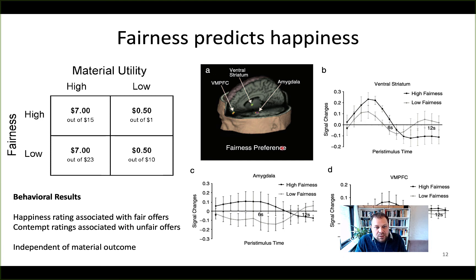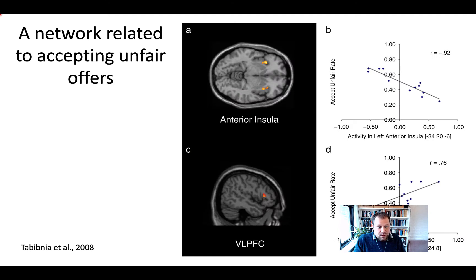When looking at the imaging results, there is a set of regions including the VMPFC, ventral striatum, and amygdala that seem to encode the fairness of the offer. High fairness trials show greater responses in the ventral striatum relative to low fairness trials, and the same is observed in the VMPFC and to some extent in the amygdala — indicating this is driven purely by fairness and not by the monetary amount offered on a given trial. Tabibni et al. also replicates some results from the Sanfey study.